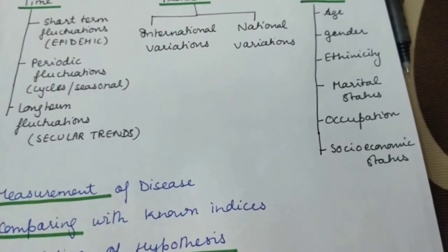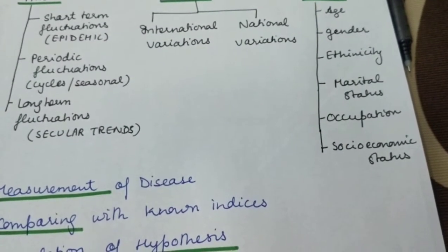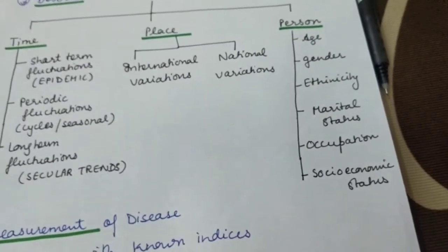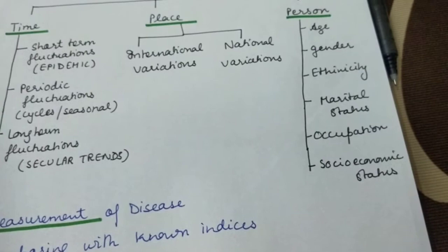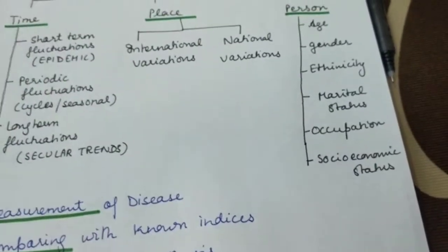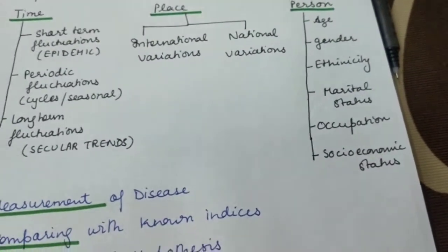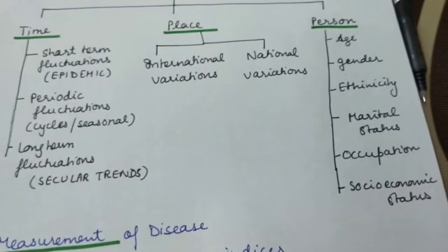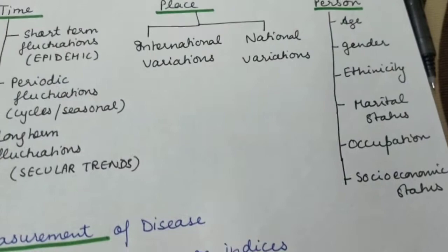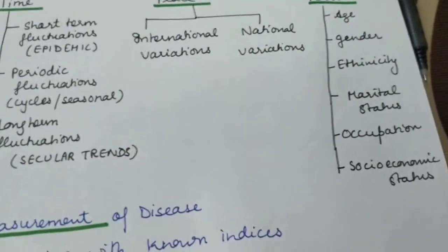Marital status also matters — for example, carcinoma cervix is less common in nulliparous women and more common in multiparous women. Occupation, socioeconomic status, behavior, stress, and migration can all have a significant impact on the disease process. If someone asks what descriptive epidemiology is, it is the study which describes the disease in terms of time, place, and person — that is the simple definition.